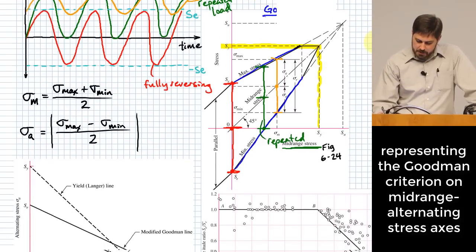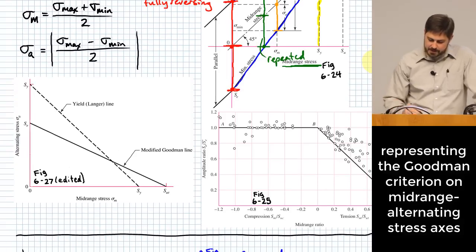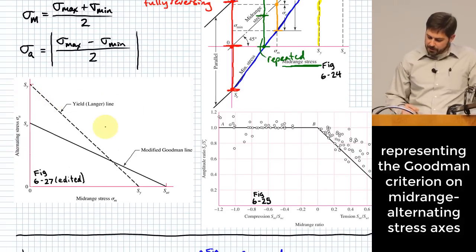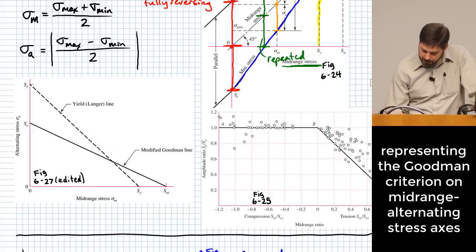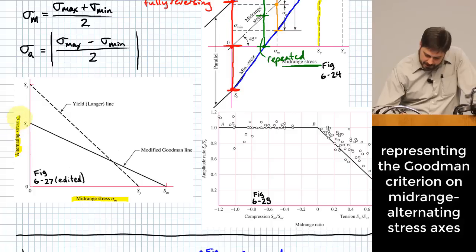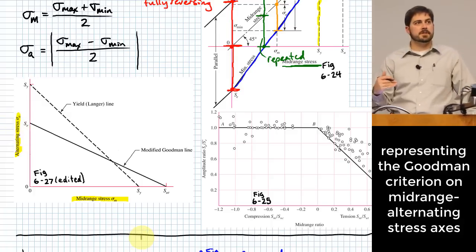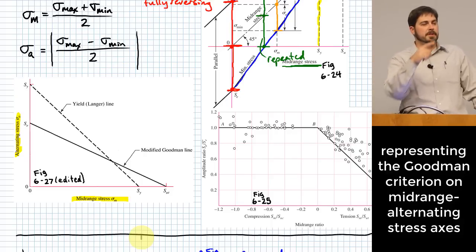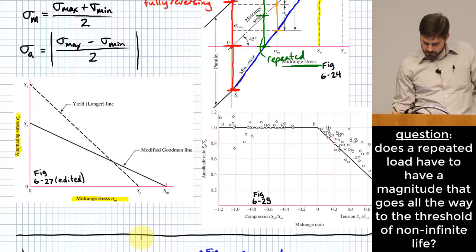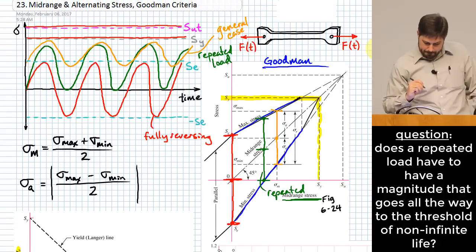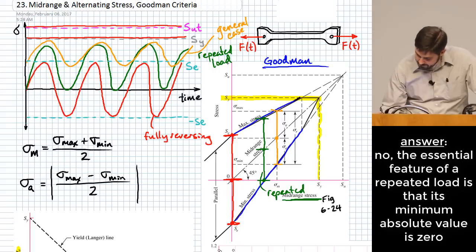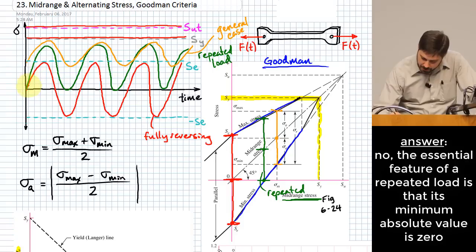Let me show you an alternate expression of the Goodman criteria. What we do is draw straight lines using two key axes: mid-range stress on the horizontal and alternating stress on the vertical. We're going to use this set of axes a lot to describe different ways things could be loaded.